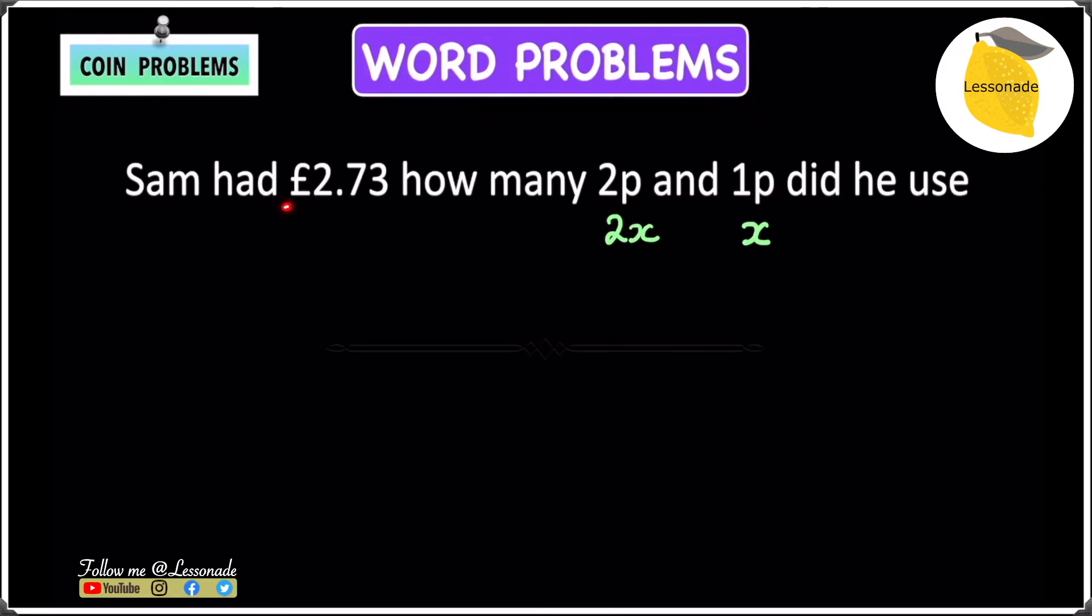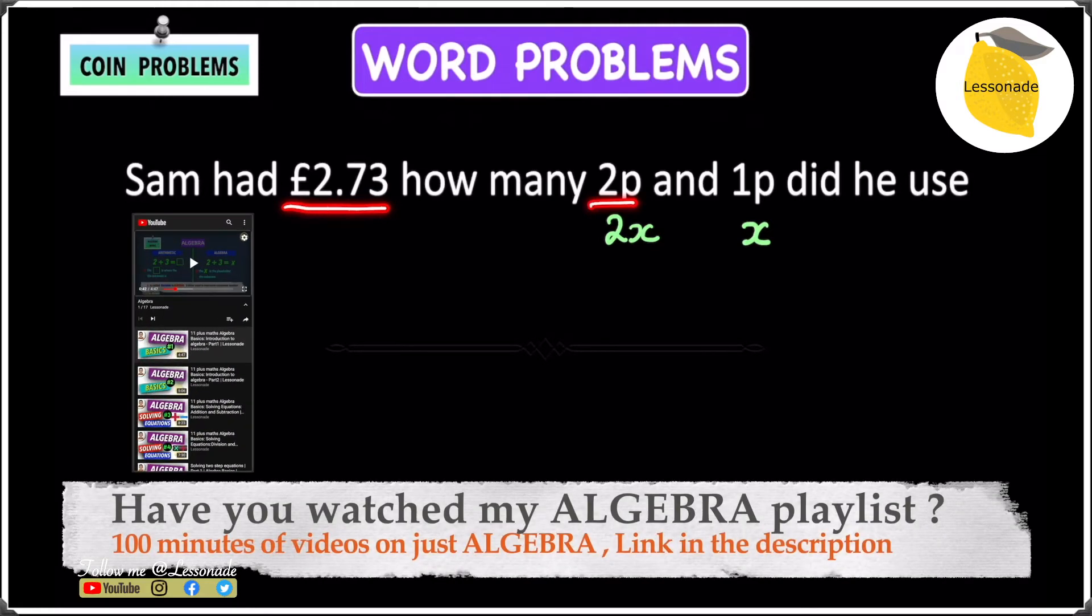The next thing, if you notice, is that we have £2.73 and we have 2p and 1p. So on this side, we have pence. And over on this side, we have pounds. And these are two different values. These are two different units. So we have to change both of these units into the same.